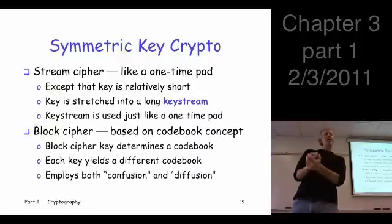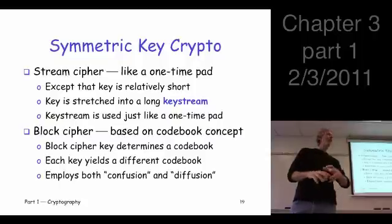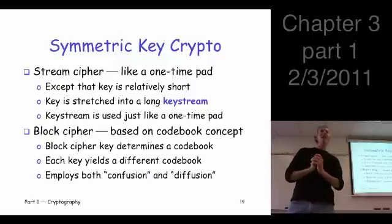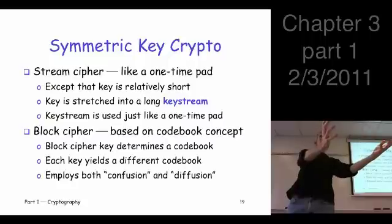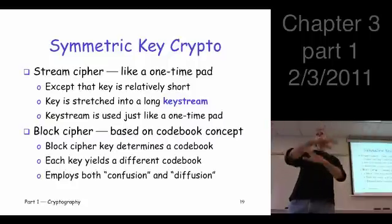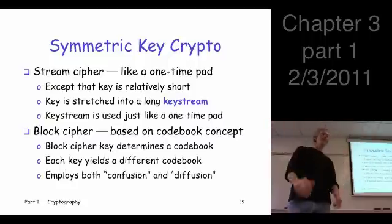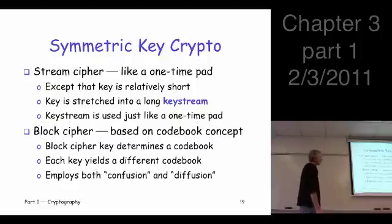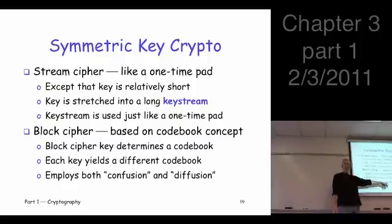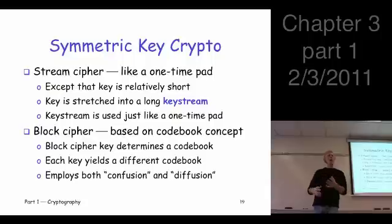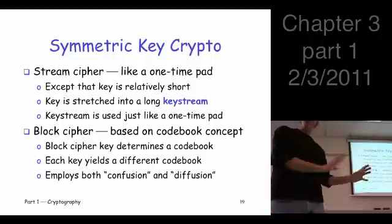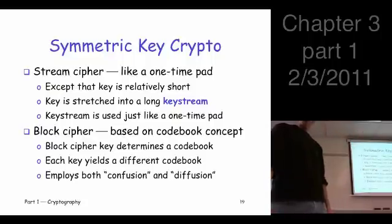The deal with a block cipher is you don't just have a single code book. You've got a huge number of code books essentially indexed by the key. Plug in a key, that gives you a code book; change the key, you've got a new code book. The code books use both confusion and diffusion, at least within a block. Stream ciphers are kind of a confusion-only thing, just like the one-time pad.